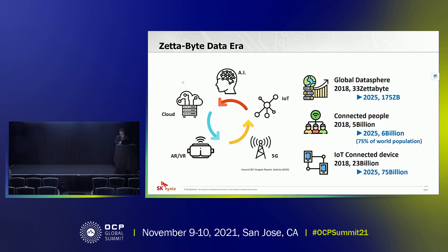At the same timeframe, the number of users connecting to the internet is expected to increase from 5 billion to 6 billion by 2025 — which is 75% of the world's population. Also, the number of devices connected via IoT will increase from 23 billion to 75 billion.